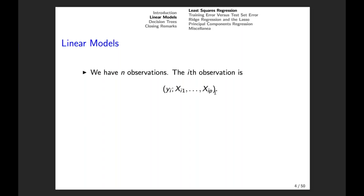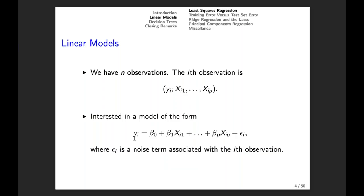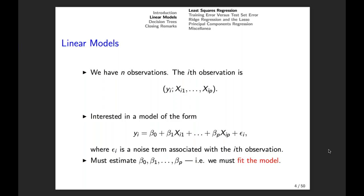We have n observations. For the i-th observation, the response is Y sub i, and X_i1 through X_ip denote the p features. For example, Y_i might be blood pressure — a quantitative value — and X_i1 through X_ip are biomarkers predictive of blood pressure. In a linear model, Y_i equals intercept beta_0 plus a coefficient beta_1 times X_i1, and so on through to beta_p times X_ip, plus a noise term epsilon_i. We need to estimate these unknown coefficients beta_0 through beta_p — in other words, we have to fit the model.